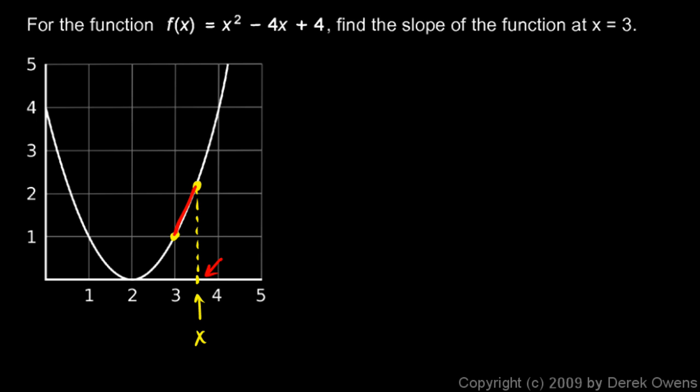And then imagine x approaching 3. So look down here on the x-axis. Imagine this point right here, some value x, and it's sliding over toward 3, getting really close to 3. And as it gets close to 3, this little point right here on the curve slides down the curve and gets really close to this point right here. And this segment that's marked in red gets really short. And in the limit, as x approaches 3, the slope of that little segment approaches the slope of the curve at that point.